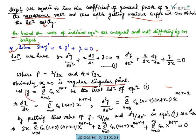We assume the solution y = summation from n=0 to infinity of c_n · x^(n+r), called equation one. Differentiating y with respect to x, we have dy/dx = summation from n=0 to infinity of c_n · (n+r) · x^(n+r-1).